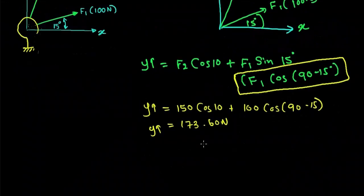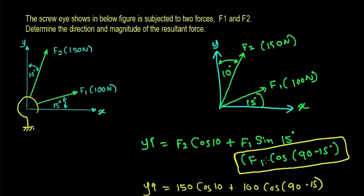Then I'm going to find out the force components of F1 and F2 towards the X direction. For X direction, I can write the equation as F1 times cos 15 plus F2 times sin 10.